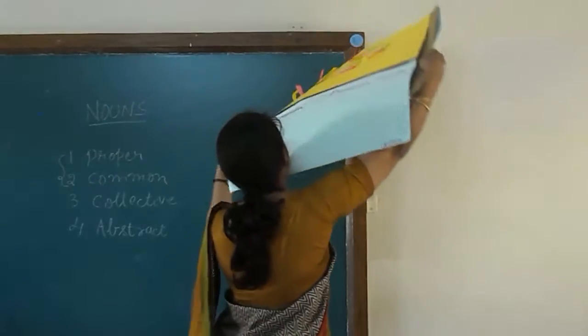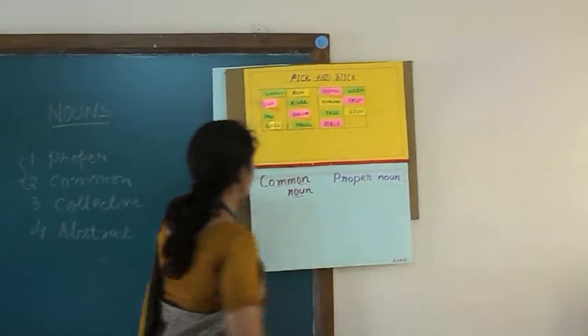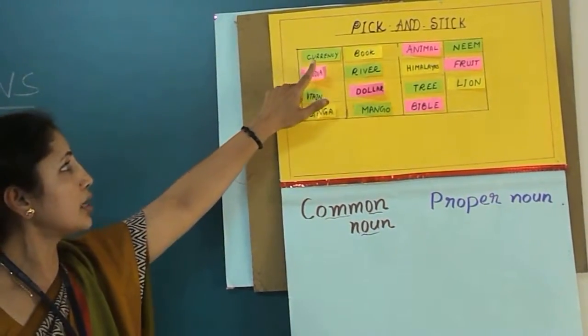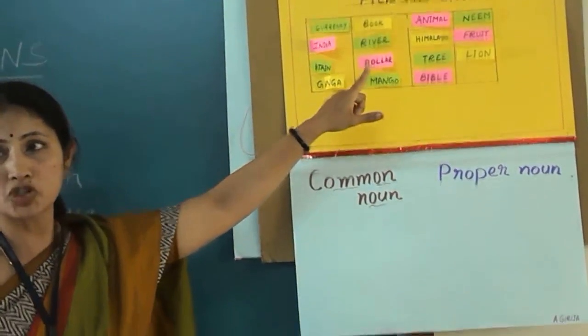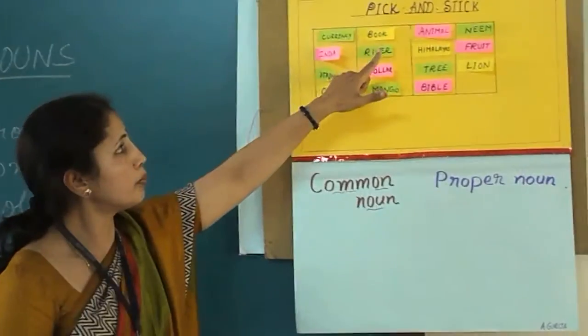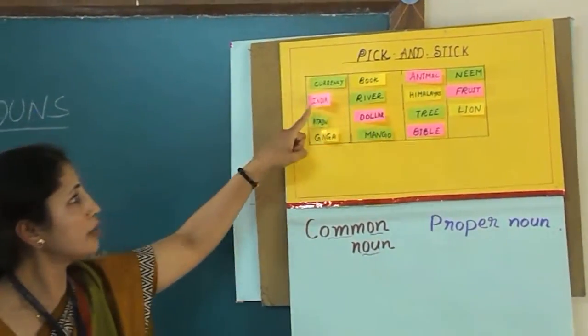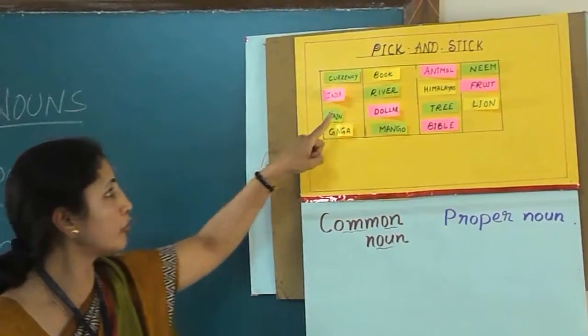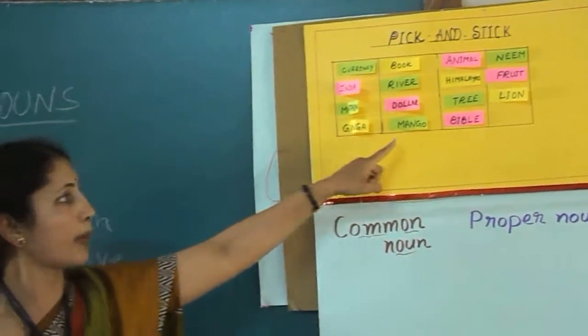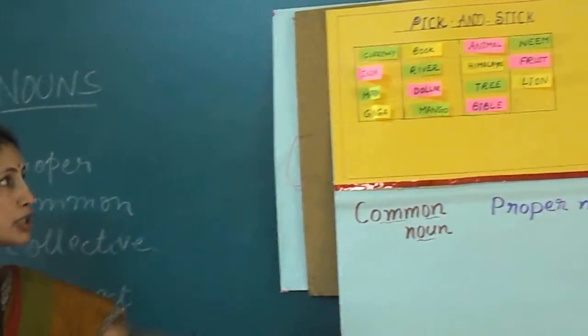In this activity, I have taken the names of common nouns and proper nouns and written them on color strips pasted on a chart. There are many names like currency, book, animal, India, river, Himalayas, fruit, mountain, dollar, tree, lion, Ganga, mango, Bible, etc. So they are a mix of both common and proper nouns.